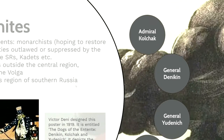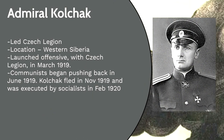Admiral Kolchak led the Czech Legion, with his location in Western Siberia. He launched his offensive with the Czech Legion in March 1919. The communists began pushing back in June 1919, and Kolchak fled in November 1919. He was eventually executed by Socialist Revolutionaries in February 1920, captured because of the way he had treated both them and the people in the areas he occupied.